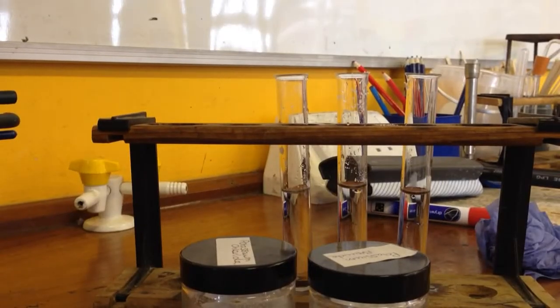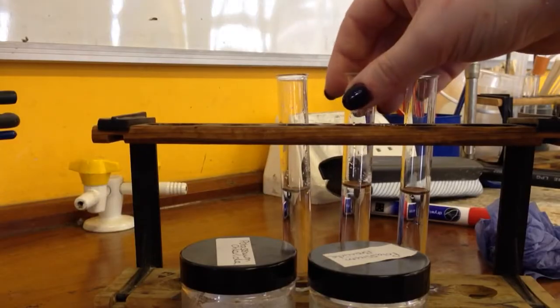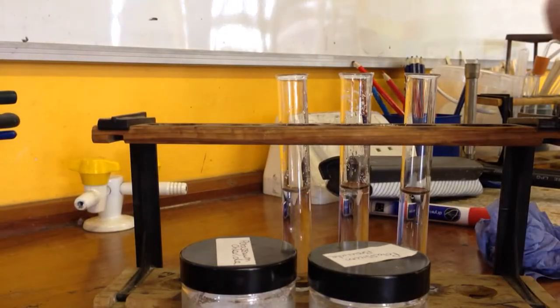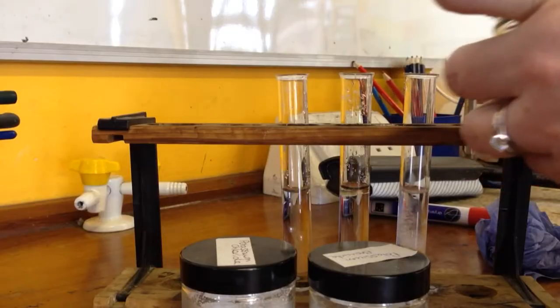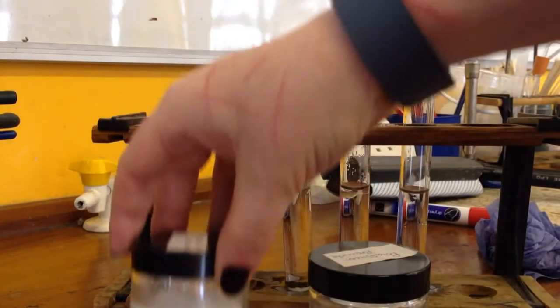So here we are testing for halide ions. I've got some test tubes for water and into the bottom of these I'm just putting a spatula full of the potassium salt for each of them.